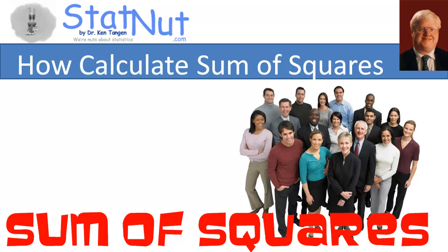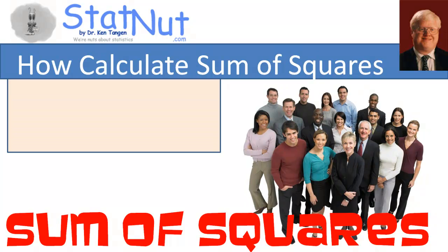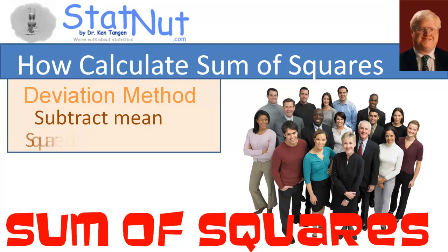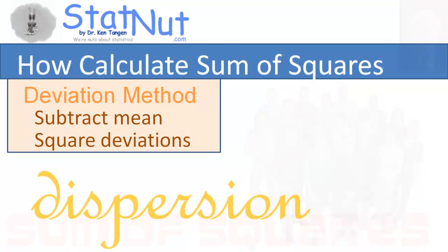You may have seen people use the deviation method for calculating sum of squares. They subtract the mean from each score, square the deviations, and add them up. But no one actually calculates sum of squares that way. The deviation method is for teaching the concept of dispersion.